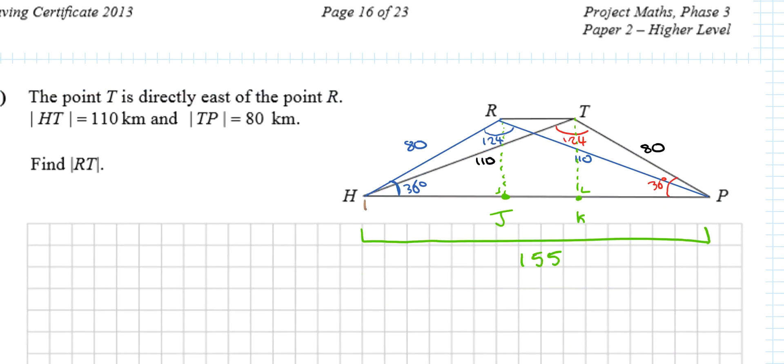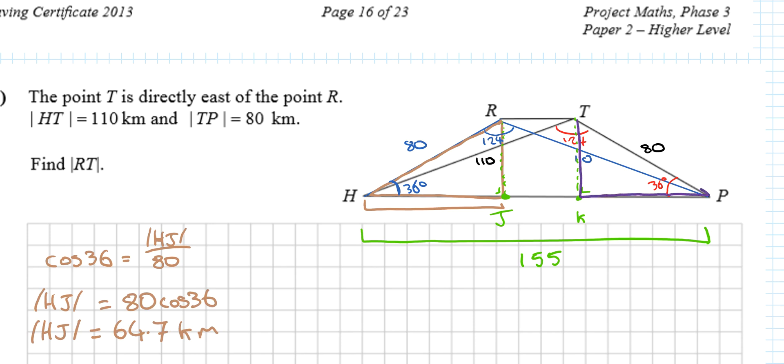Cos 36 equals the adjacent (HJ) over 80. So HJ = 80 cos 36, which is 64.7 kilometers. Similarly, you don't have to do it on the other side because it's an identical triangle.